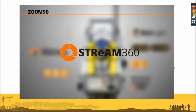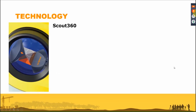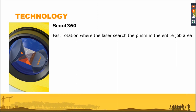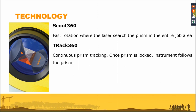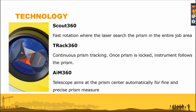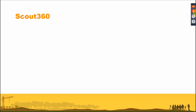So this is the workflow of a robotic total station. The three main technologies are: Scout — fast rotation where the laser searches the prism in the entire job area; Track — once the prism is found, the total station continuously follows the prism; and AIM 360 — the telescope automatically measures the center of the prism for a very accurate measurement.